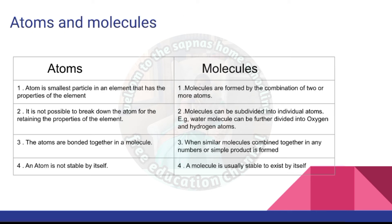Differences between atoms and molecules: An atom is the smallest particle in an element that has the properties of the element. A molecule is formed by the combination of two or more atoms. It is not possible to break down atoms while retaining the properties of the element. Molecules can be subdivided into individual atoms — example: a water molecule can be further divided into oxygen and hydrogen atoms. Atoms are bounded together in a molecule. When similar molecules combine together, a simple product is formed. An atom is not stable by itself, but a molecule is usually stable enough to exist by itself.